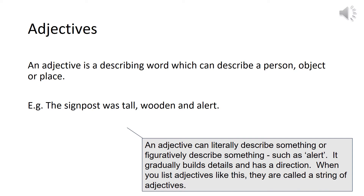Here's an example. I've imagined I was looking at the girl walking around in the previous paragraph, and I've turned around and seen the signpost for the first time. So I'm literally basing this in the present, seeing what I can see right here and now. The example is: the signpost was tall, wooden, and alert. So there's your string of adjectives — tall, wooden, alert. And it's always good to put things in three because it creates power in a direction. An adjective can literally describe something, or it can figuratively describe something, such as the word 'alert'. It gradually builds detail and has a direction. When you list adjectives like this, they are called a string of adjectives.